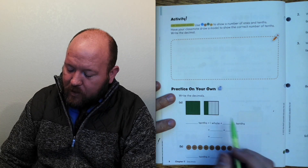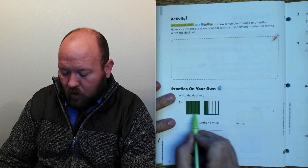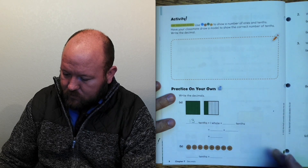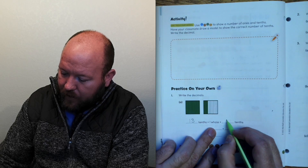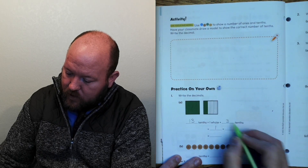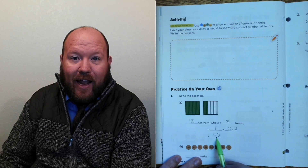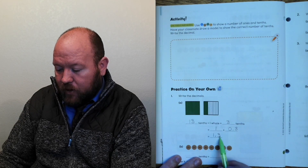Let's look at this together. How many tenths are there? Well, here are 10 tenths because it's a whole, plus 3, so 13 tenths. That means we have 1 whole and 3 tenths. I would write that as 1 and 3 tenths, or 1.3 — because remember, the decimal point stands for 'and,' and everything that comes after it is less than a whole.